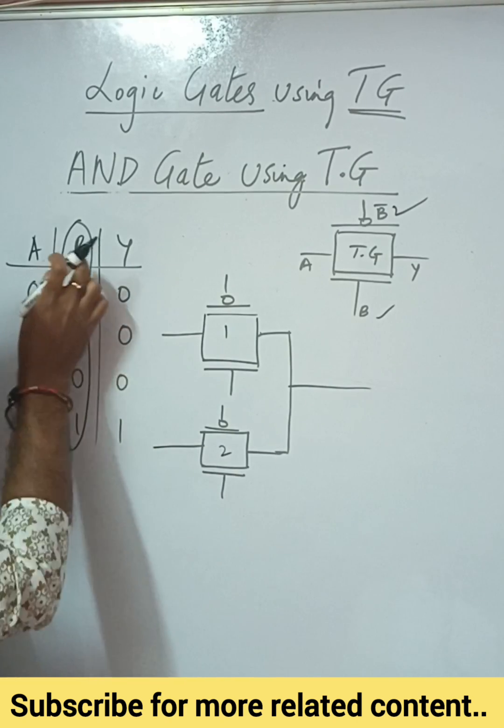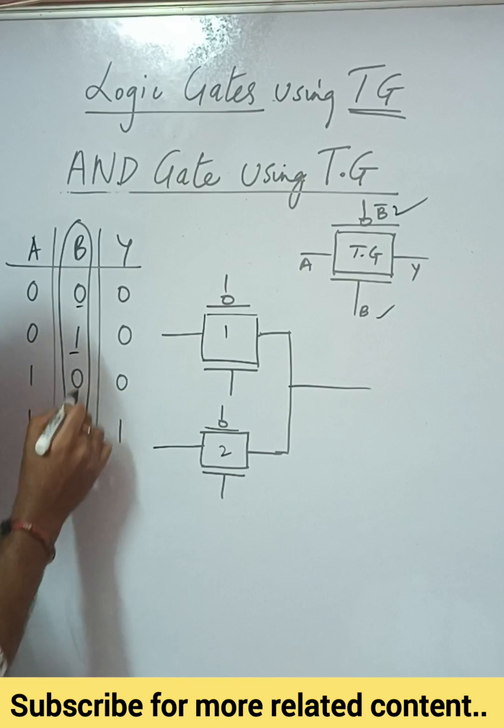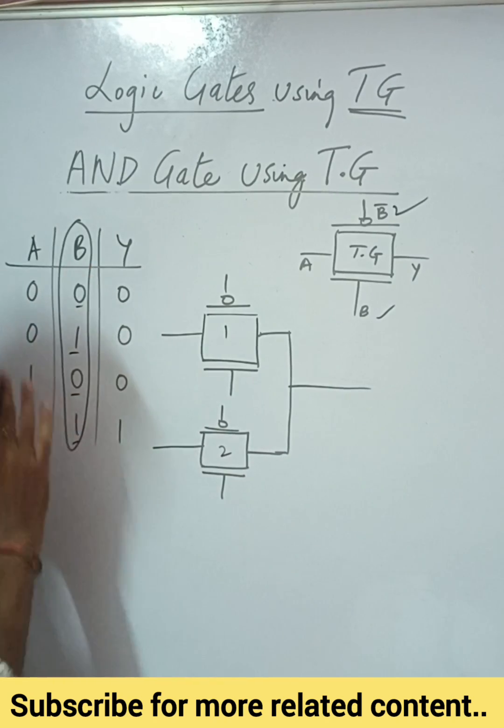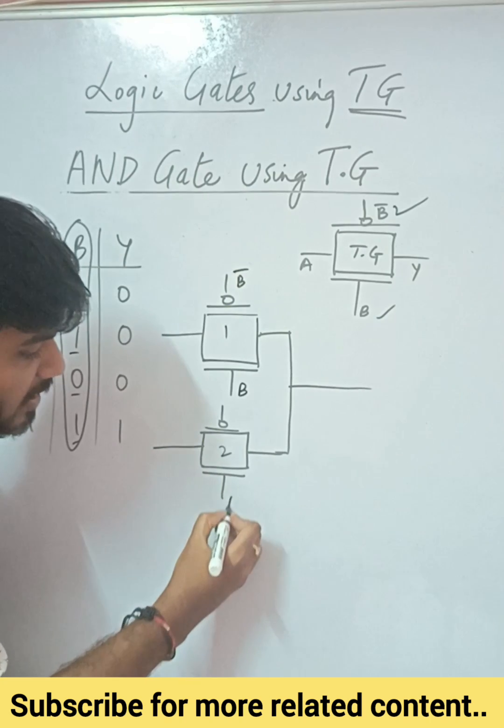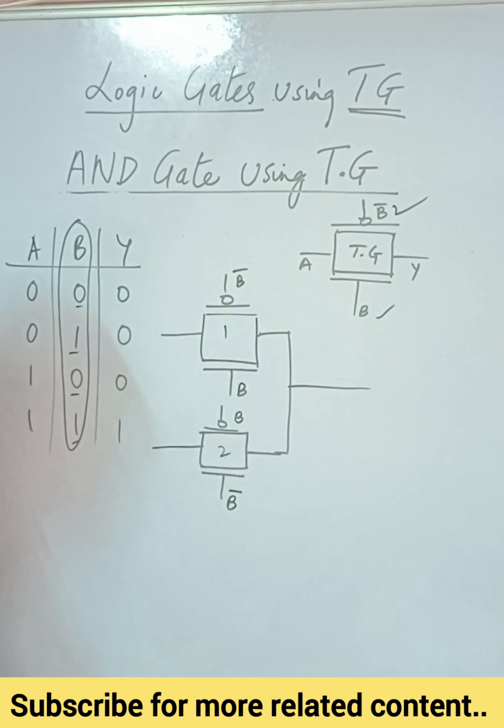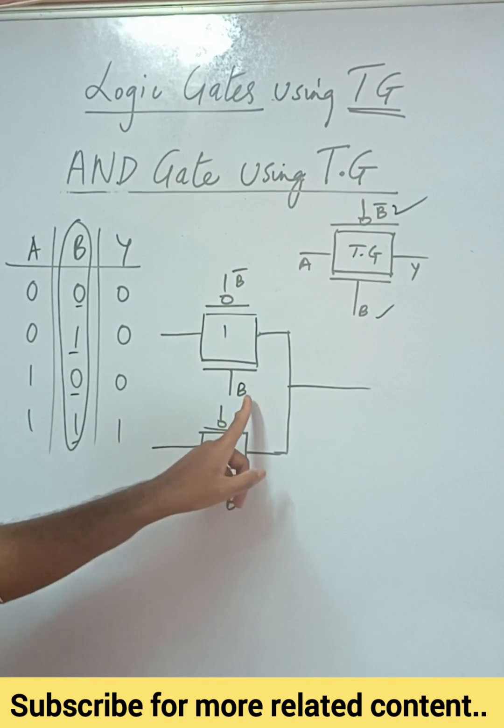Now in this case b varies from zero to one. I will take b as the control signal. So I will assign here b and this will be your b bar. So similarly this will be b bar and this will be b, as this has to be connected.